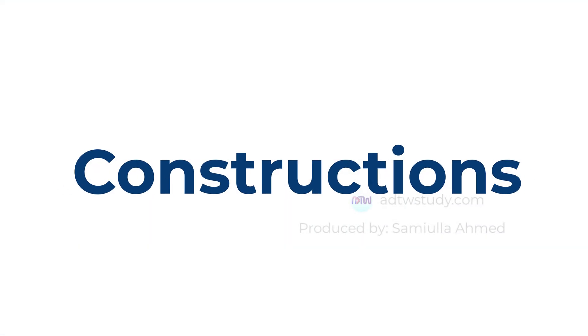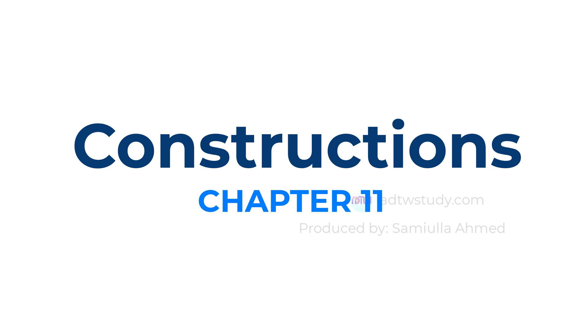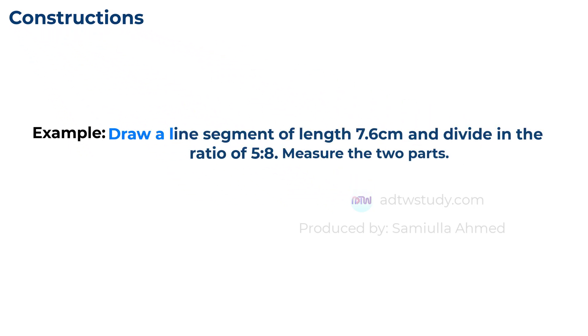Constructions. In this video we will continue with chapter 11 and solve a few more examples to understand how to divide a line segment into a given ratio. Consider this example: draw a line segment of length 7.6 centimeters and divide it in the ratio of 5 to 8. Measure the two parts. Let's solve this example step by step.